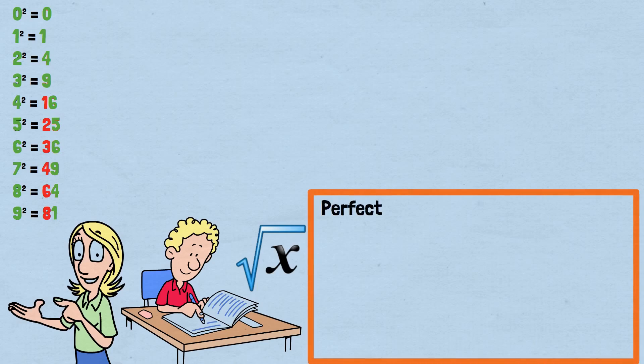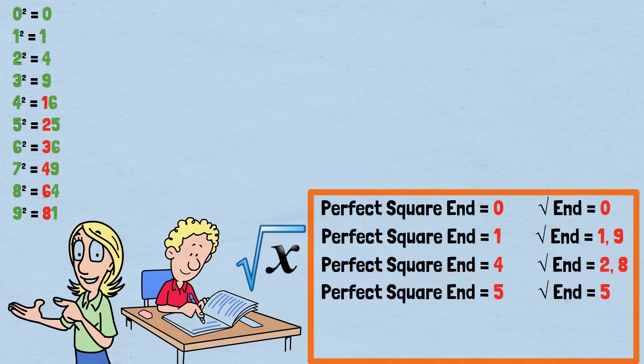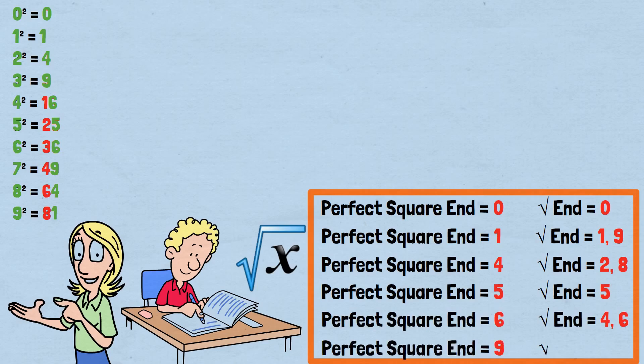If a perfect square ends in zero, its square root must end in zero. If a perfect square ends in one, its square root could end in either one or nine. If it ends in four, the root could end in two or eight. If it ends in five, its root must end in five. If it ends in six, the root could end in four or six. If it ends in nine, the root could end in three or seven.